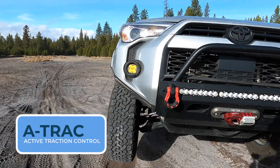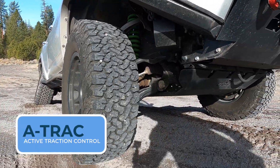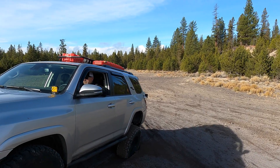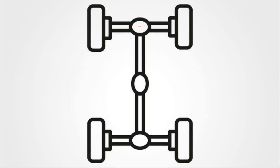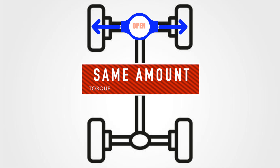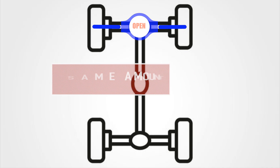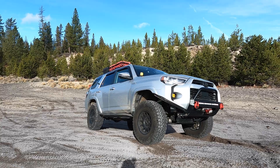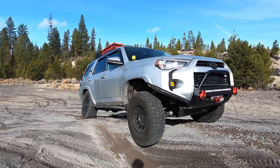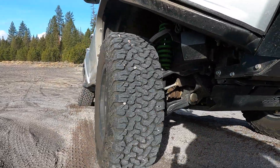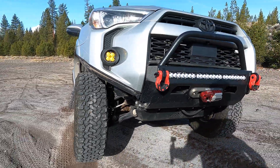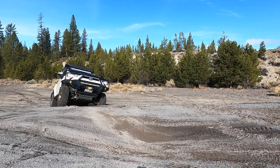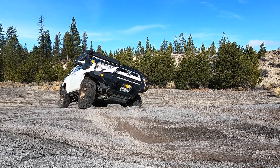Starting with A-TRAC — this is the classic cross-axle situation where you have one tire on each axle without traction. On an open differential, each tire gets the same amount of torque. That's important: the tire with the least resistance sets the maximum torque that either tire can get. So if one tire is up in the air spinning, it may take only 25 foot-pounds of torque to spin it, meaning the other tire with great traction can also only get 25 foot-pounds — not enough to move the vehicle.